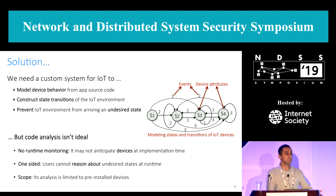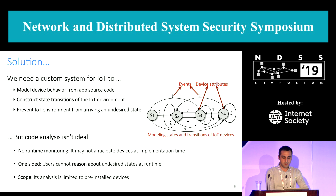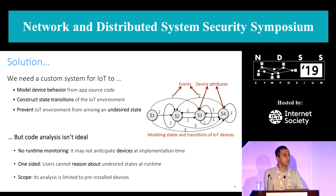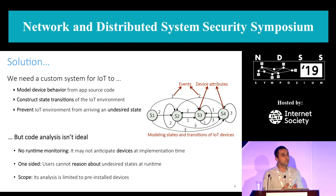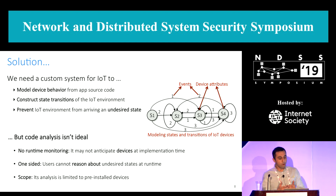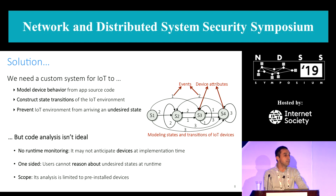State machines have a set of states and transitions. For instance, we can map device attributes to states and events to transitions. This model can be constructed through static code analysis or by monitoring device behaviors when they are executing.